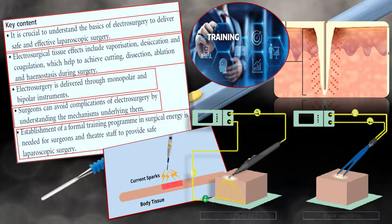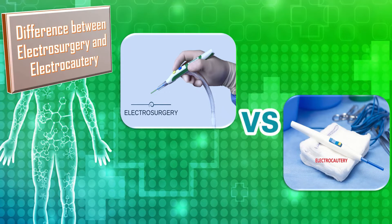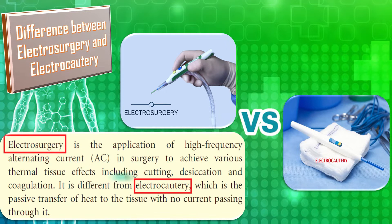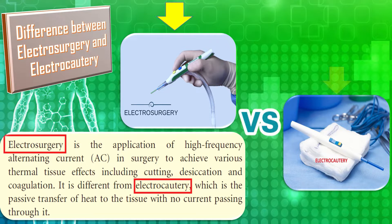This article also tells us about the difference between electrosurgery and electrocautery. Electrosurgery is the application of high-frequency alternating current in surgery to achieve various thermal effects, including cutting, desiccation, and coagulation. It is different from electrocautery, which is the passive transfer of heat to the tissue with no current passing through it.